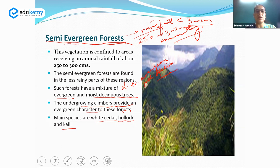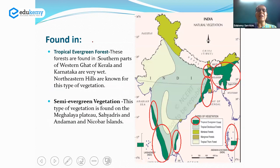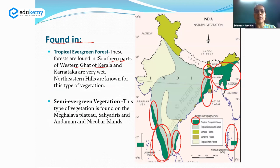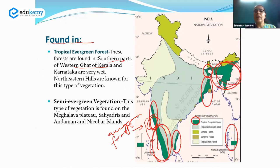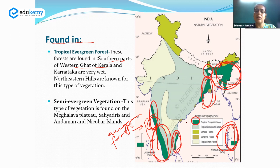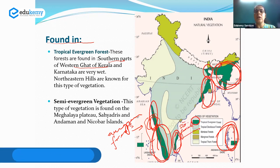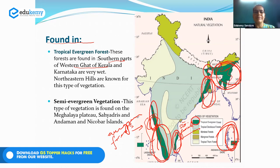The distribution of tropical evergreen forests includes the southern parts of the Western Ghats of Kerala and parts of Karnataka. They are also found in the states of northeast India, along the Sundarbans, along the Andaman and Nicobar islands, and along a small stretch of the Eastern Ghats. These areas shaded in dark green on the map show the distribution of tropical evergreen and semi-evergreen forests of India.